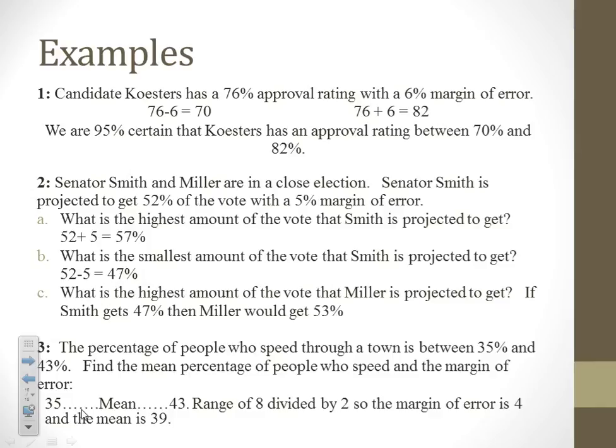Senator Smith and Miller are in a close election. Senator Smith is projected to get 52% of the vote with a 5% margin of error. The highest amount Smith is projected to get is 57%; the smallest is 47%. What is the highest amount of the vote that Miller is projected to get? Miller gets the highest percentage if Smith gets the lowest — so if we take 47% away from 100%, Miller would get 53% of the vote at most.